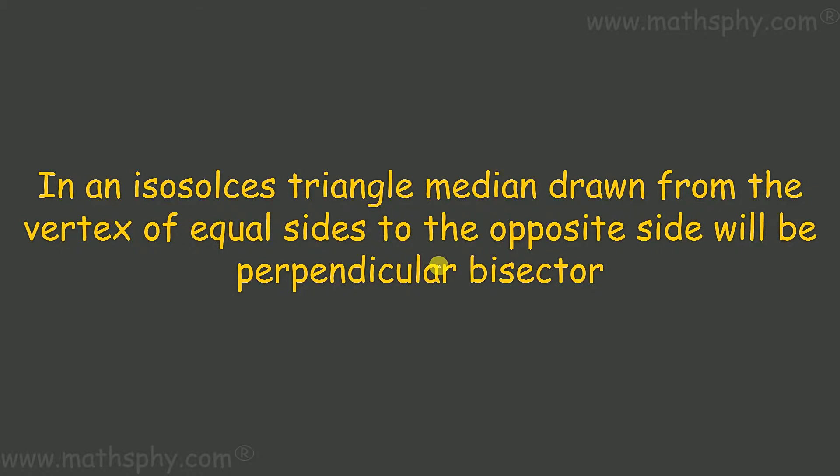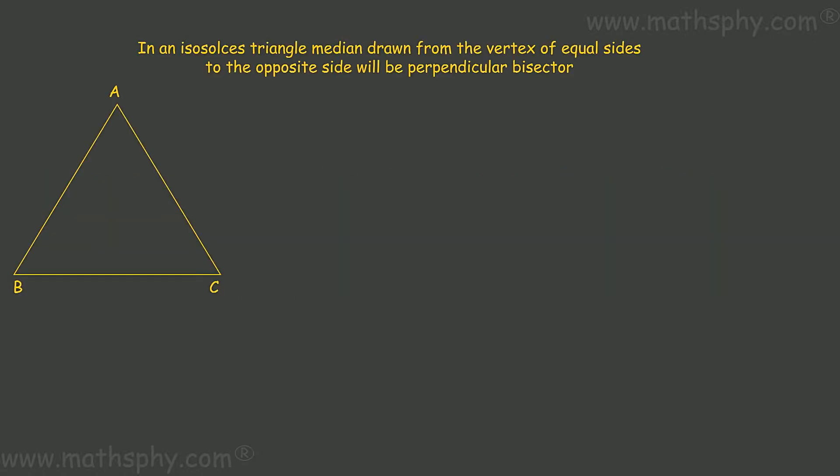This property says in an isosceles triangle, a median drawn from the vertex of equal sides to the opposite side will be a perpendicular bisector. If I have an isosceles triangle where AB and AC are equal, then the median drawn from the vertex of equal sides—AB and AC are equal so A will be the vertex of equal sides.